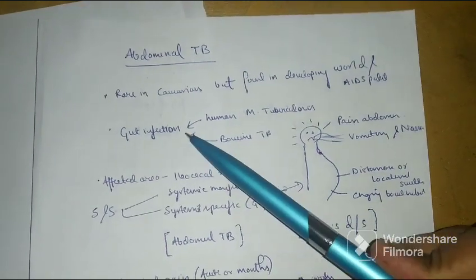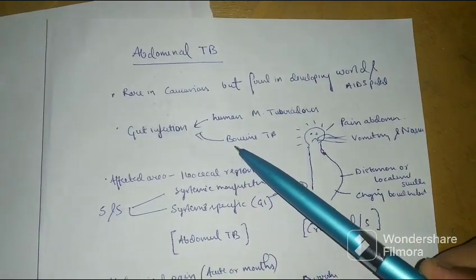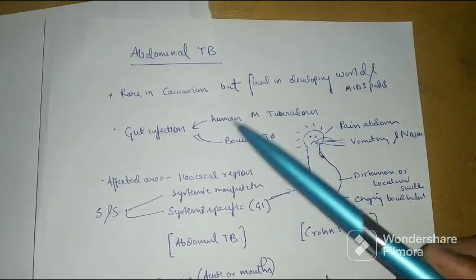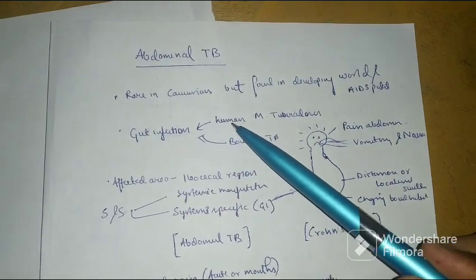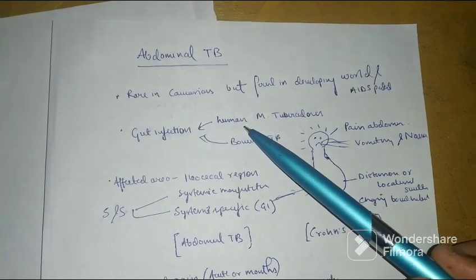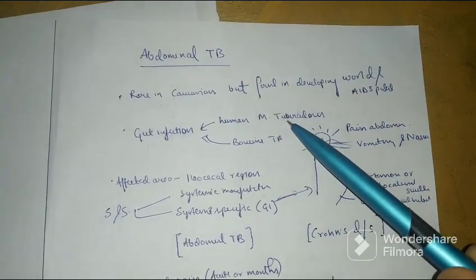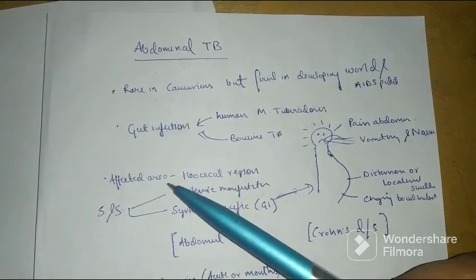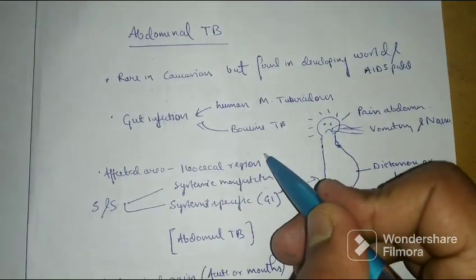It is acquired via gut infection which can occur rarely now via the bovine TB by drinking raw milk or it can occur by swallowing sputum, mycobacterium tuberculosis that reaches the gut. The affected area most commonly is the ileocecal region.